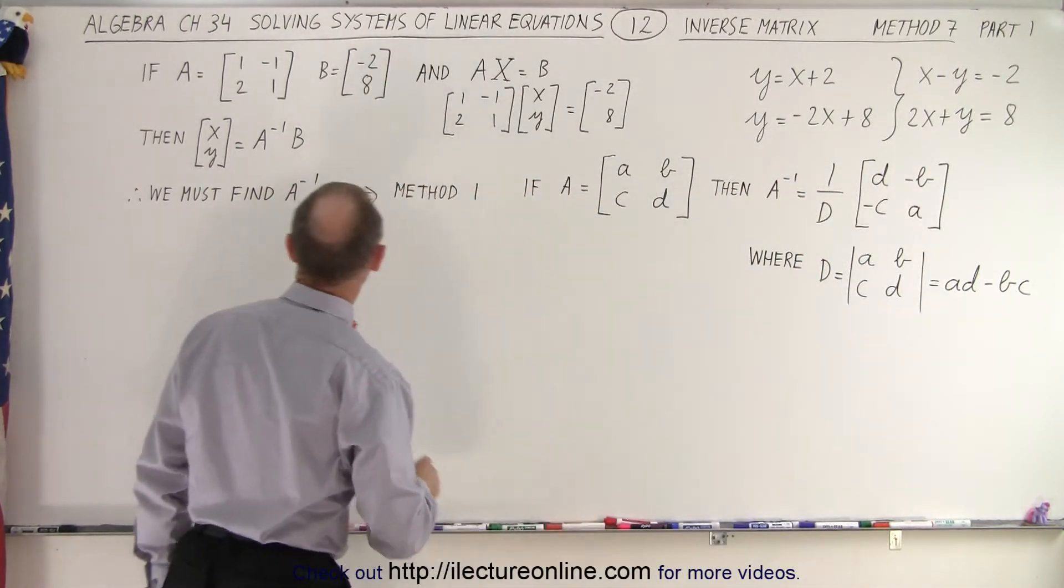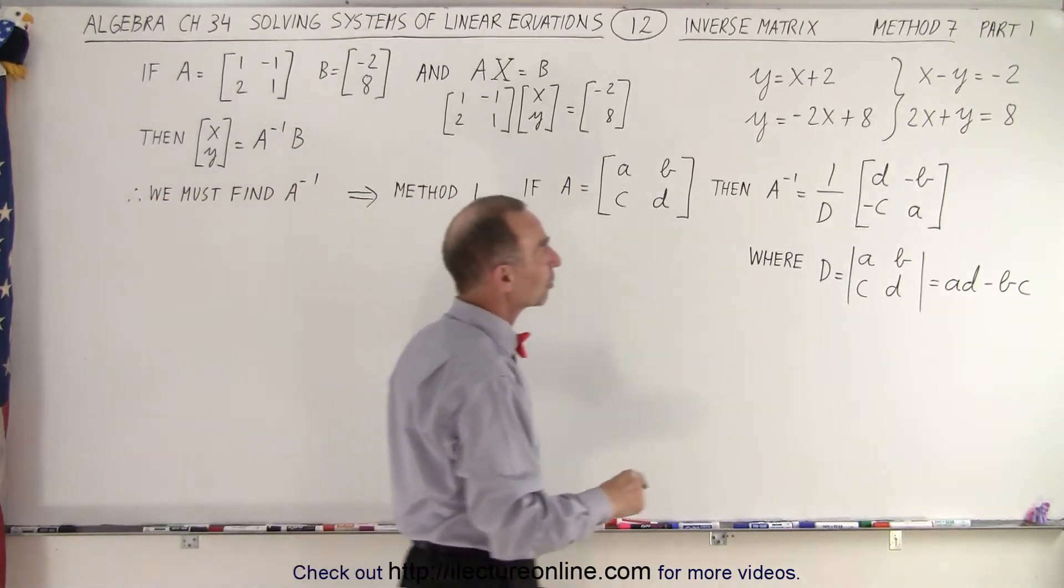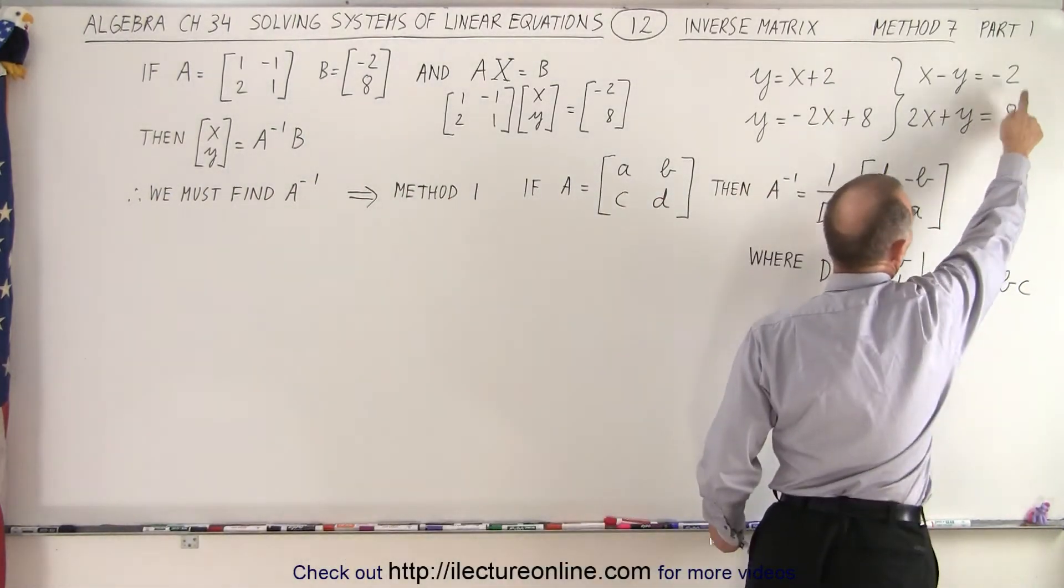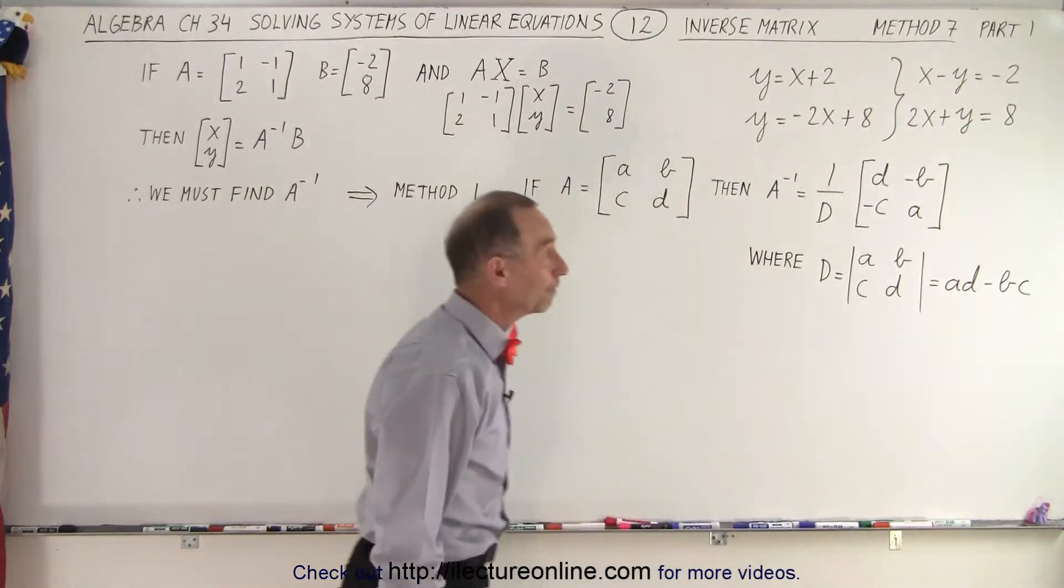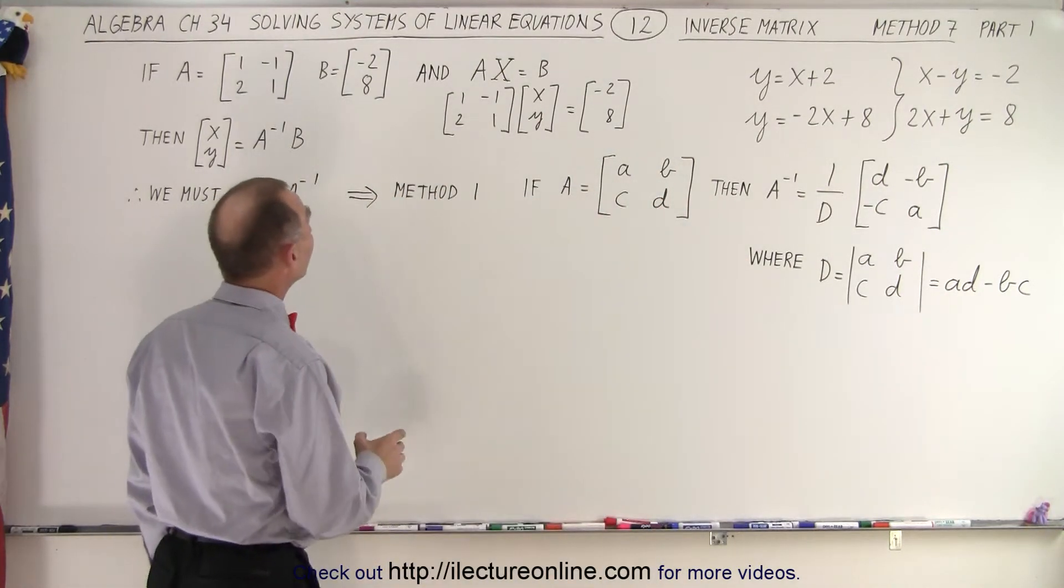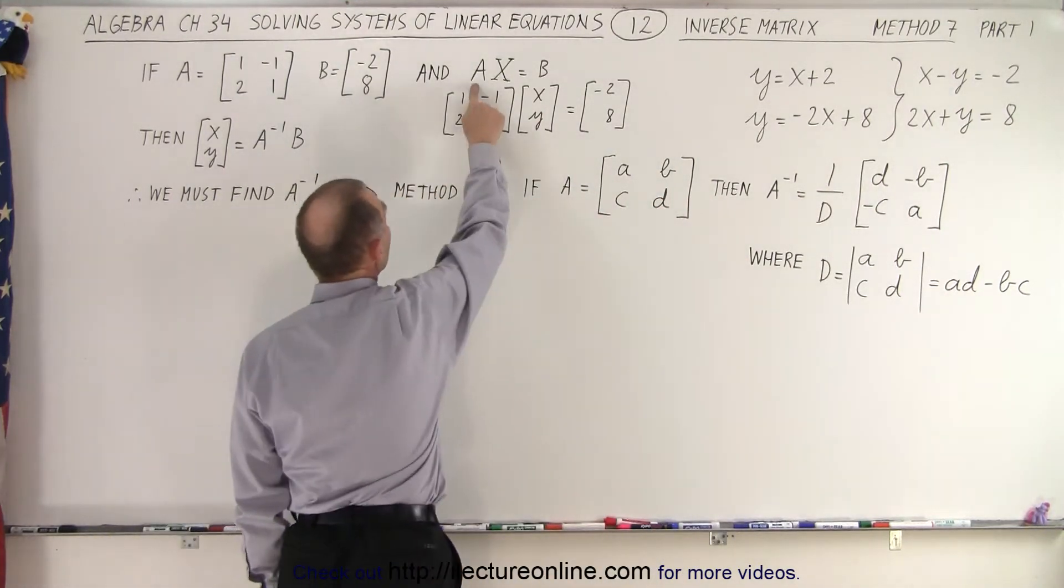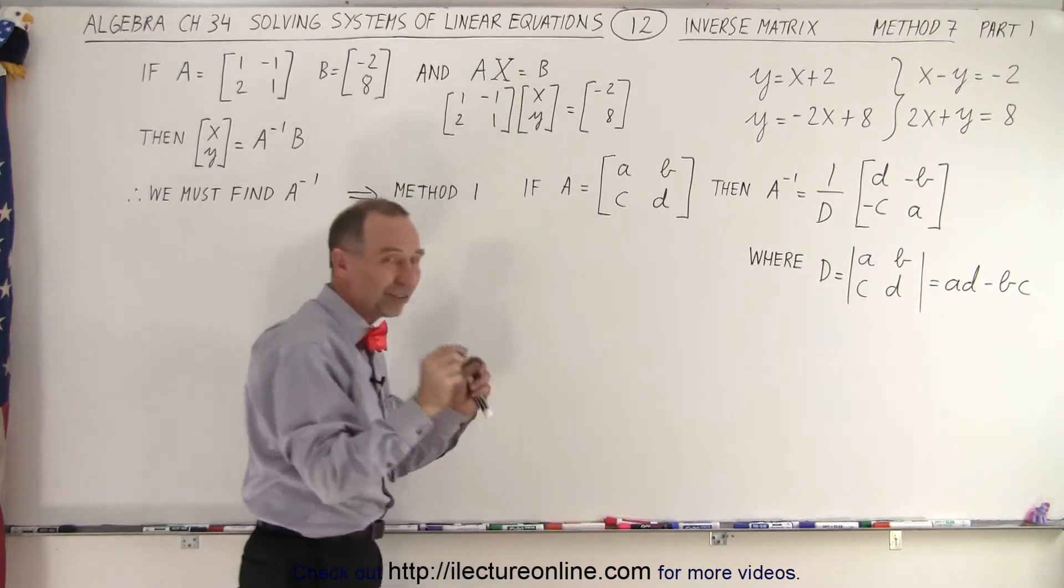Then we create a second matrix called B, and that B matrix consists of the two constants on the right side of the equal sign. Then we can say that the matrix A multiplied by this matrix, that matrix, the x with the little lines on top and at the bottom,